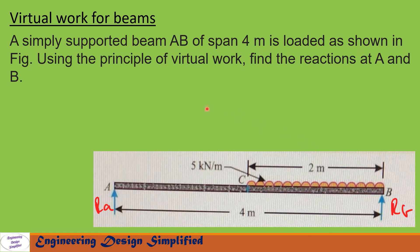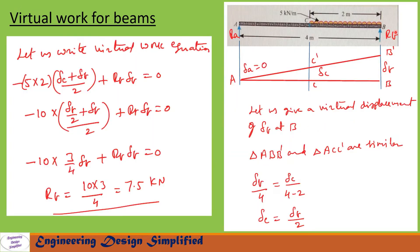To find reaction at B (R_B), let us give a virtual displacement of delta_B at B. The beam will assume position A, C prime and B prime. At end A, delta_A equals zero. At C it is delta_C, and at B it is delta_B. We have two similar triangles: AC-C prime and AB-B prime. From these two triangles we can write delta_B / 4 = delta_C / 2, which rearranges to delta_C = delta_B / 2.